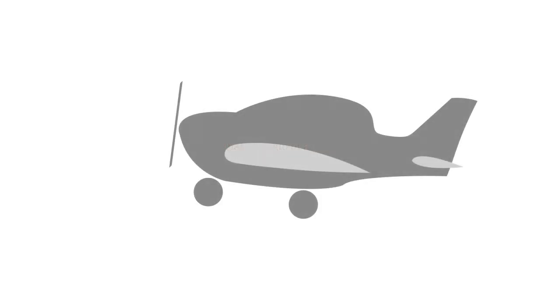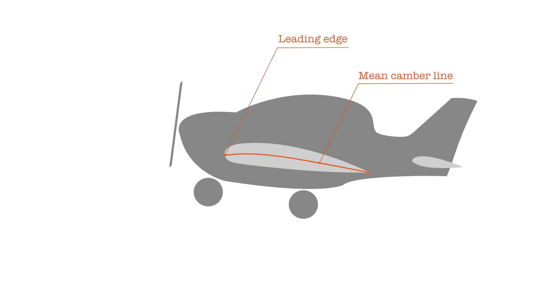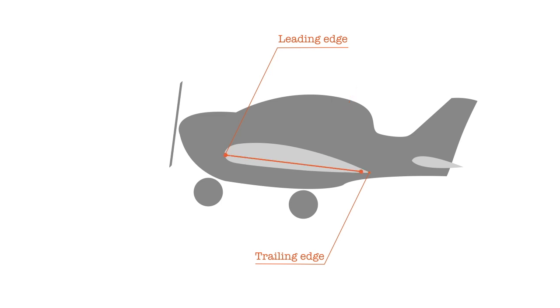Take the cross section of a typical wing. When you slice the wing precisely in half from front to back, you get the mean camber line. Along this line, the thickness of the top half of the wing matches the thickness of the bottom half. The point where the mean camber line starts is called the leading edge of the wing, and the other end is called the trailing edge. When you connect these two points together, you get the chord line.